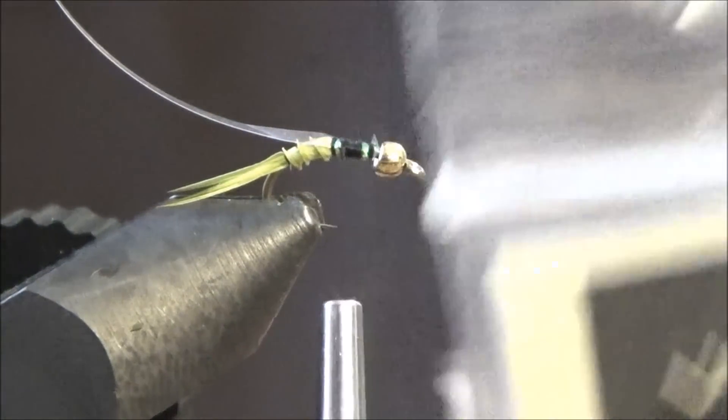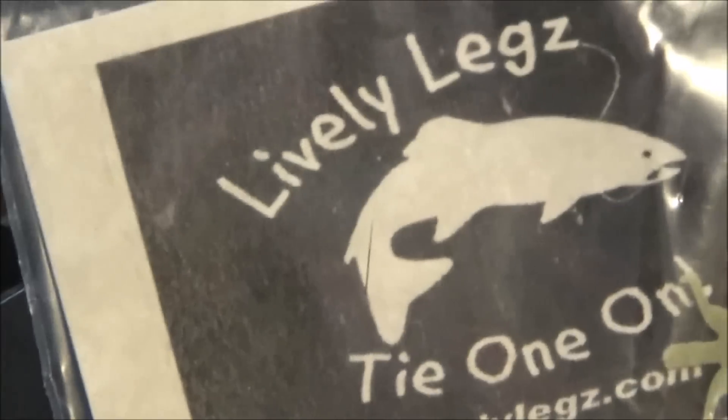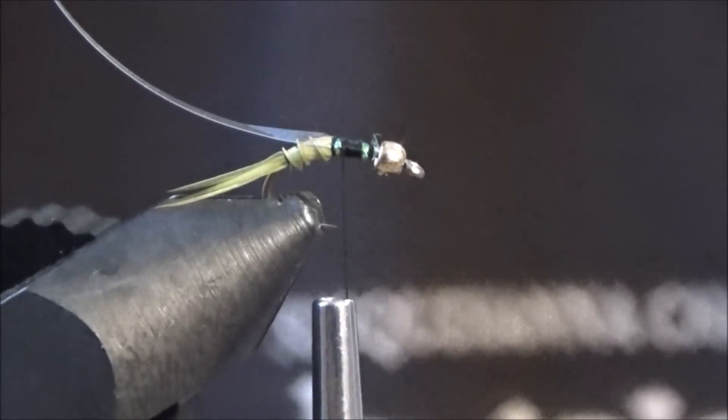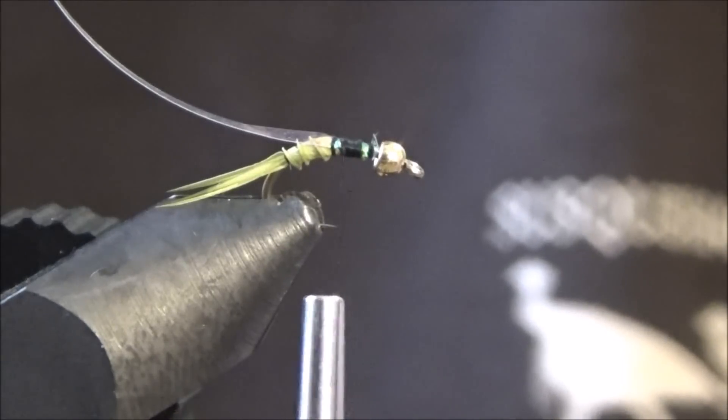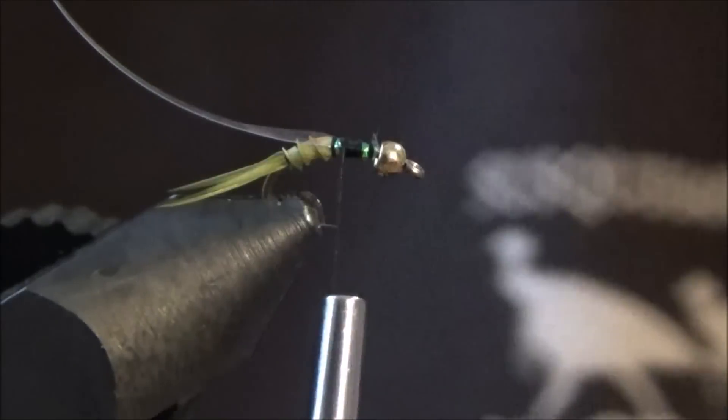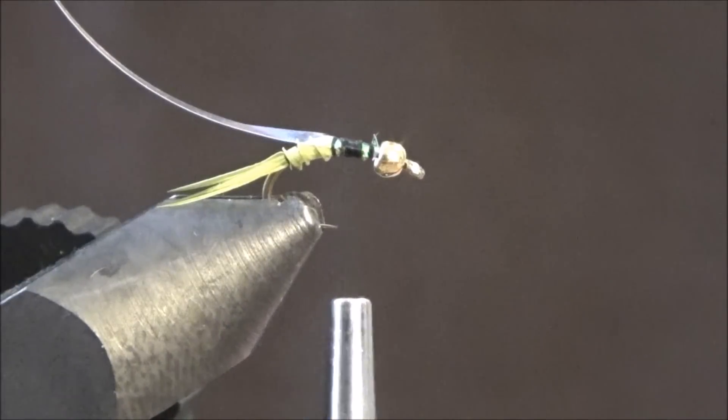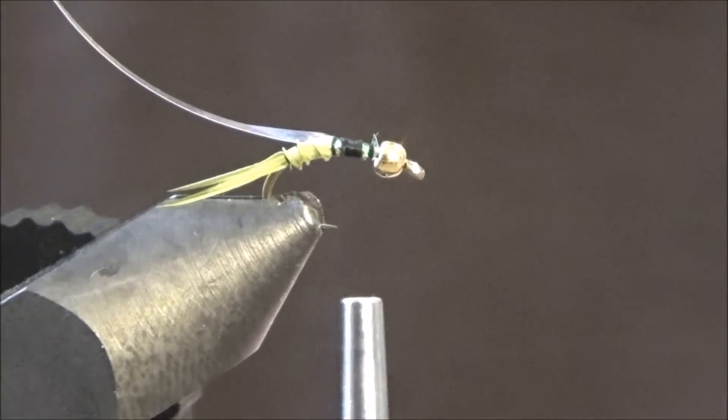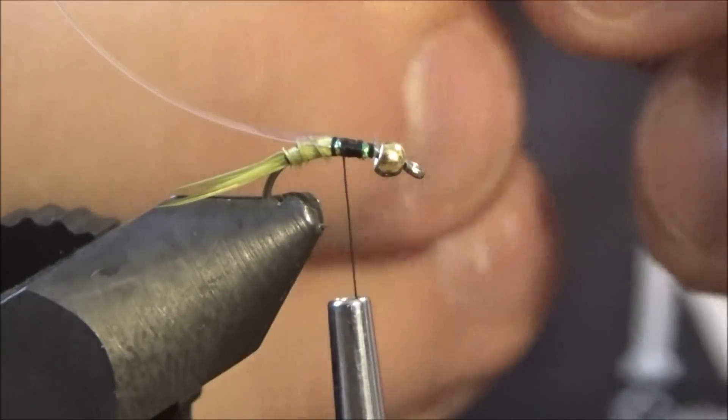Okay, now you're going to take your Lively Legs, Lively Legs in light olive. They actually just came out with a darker olive color that would work as well. These are the size 16, extra small, light olive legs. Take them out.